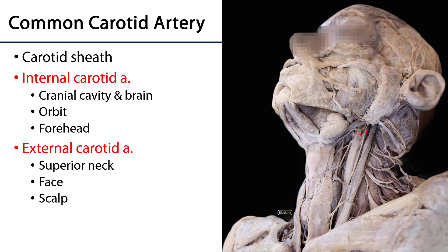The external carotid artery is going to supply the neck, the face, and the scalp with blood, whereas the internal carotid artery has no branches in the neck. It ascends up through the carotid canal of the temporal bone to service the contents of the cranial cavity, and it will also serve the orbit and a portion of the brow.